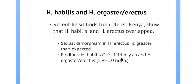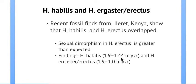In terms of differences between habilis and erectus: habilis is a little earlier at 1.9 million years ago. Erectus showed greater sexual dimorphism — the male was much larger than the female — which means a higher level of specialization by gender.